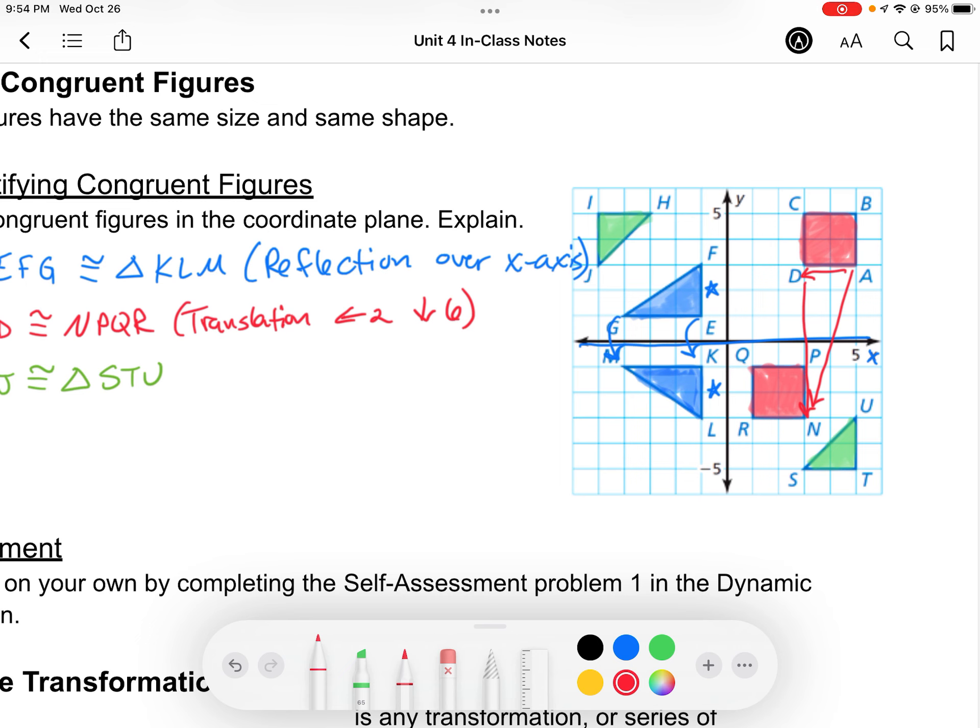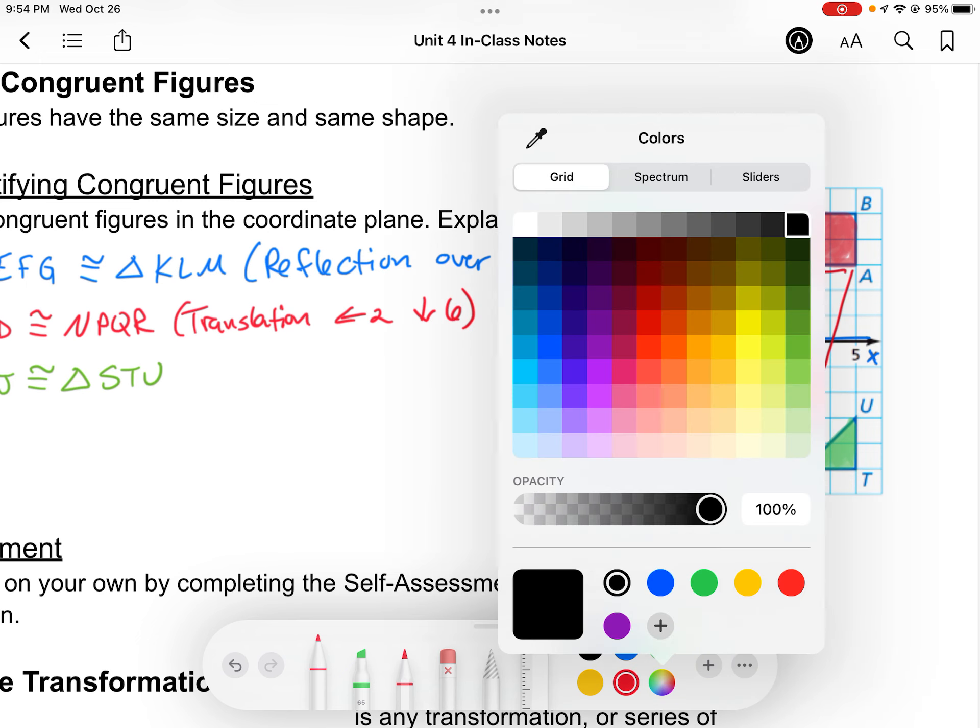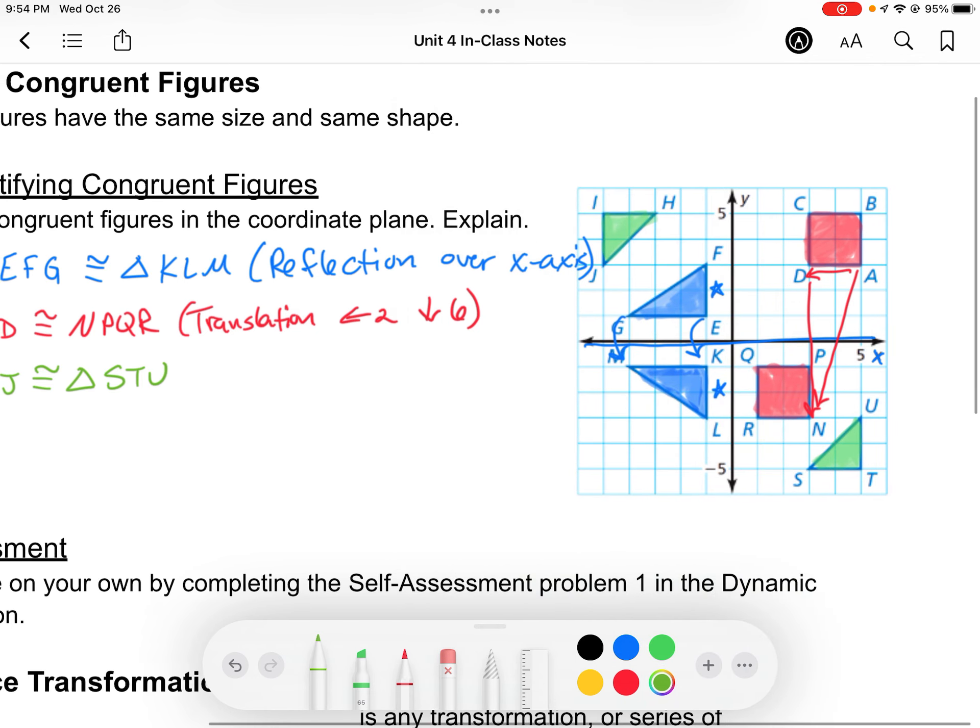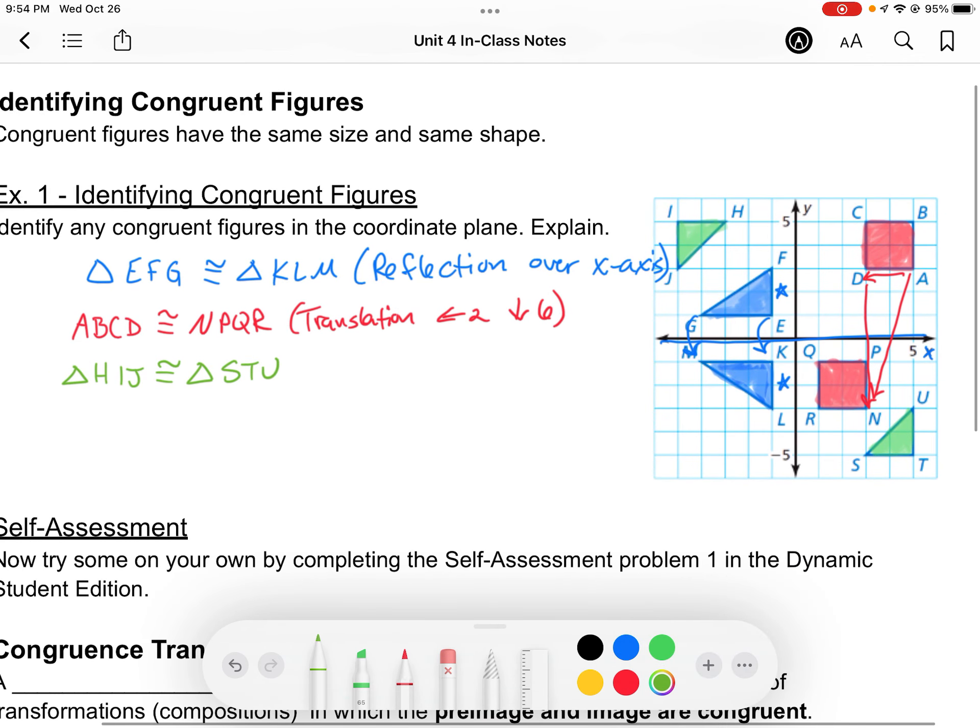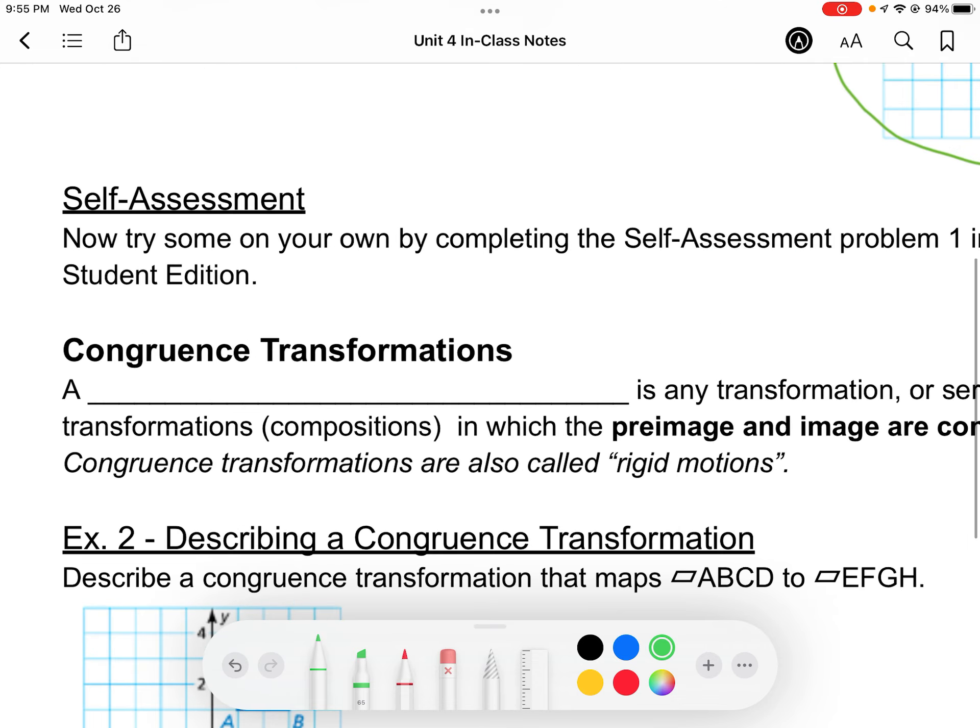So is there a transformation that would turn that triangle HIJ into triangle STU? Maybe you noticed we could do that with a rotation, rotation of 180 degrees. So you'll notice that these transformations we've been talking about over the last few lessons, reflections, translations, and rotations, those create figures that are congruent to the original figures. That makes them what we call congruence transformations.